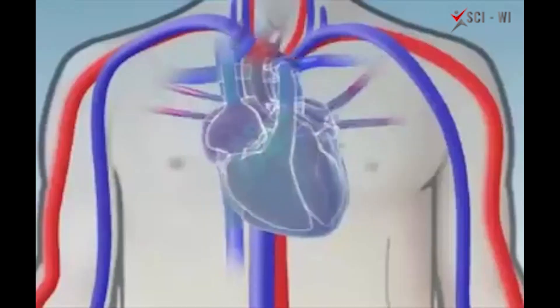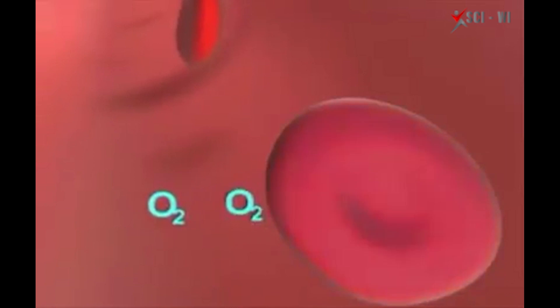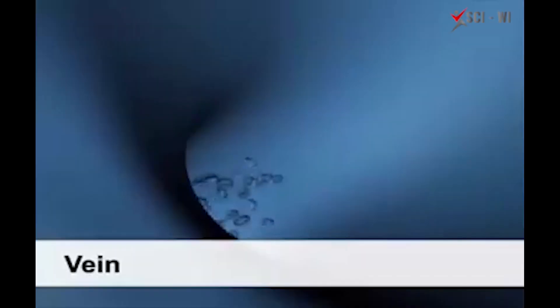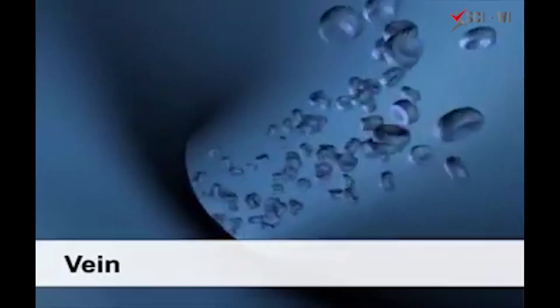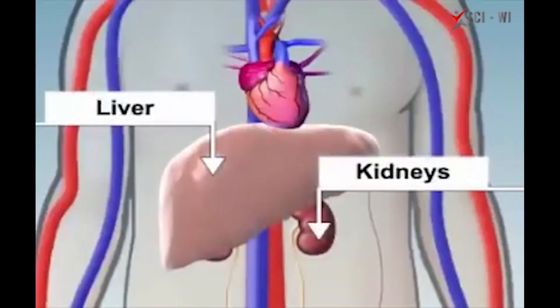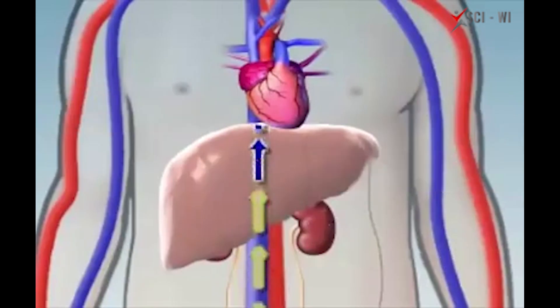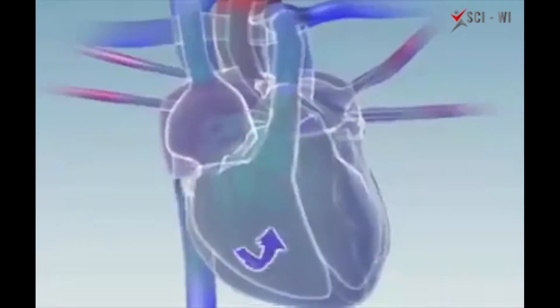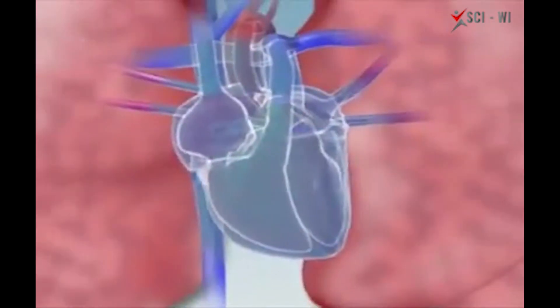Blood transfers oxygen and nutrients to your cells. In exchange, the waste from your cells, including carbon dioxide, is transferred into the blood through veins that carry deoxygenated blood back to the right atrium of the heart. Other organs filter out and dispose of the waste products. After entering the heart, the deoxygenated blood is pumped through the lungs where it is loaded back up with oxygen, and the cycle is repeated.